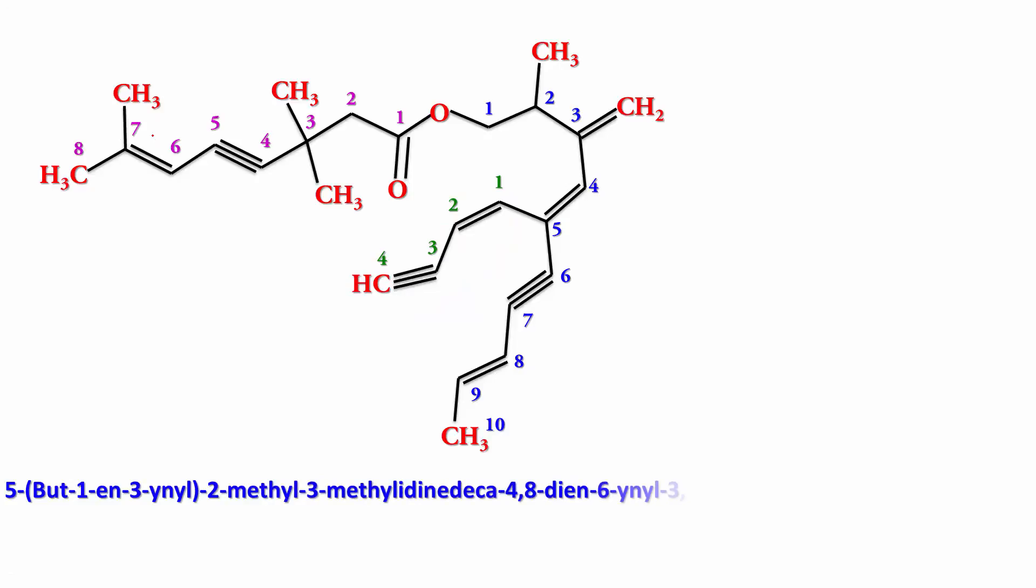3,3,7-trimethyl Oct-6-en-4-ynoate. So the complete name is 5-(Bute-1-en-3-ynyl)-2-methyl-3-methylidine Deca-4,8-dien-6-ynyl 3,3,7-trimethyl Oct-6-en-4-ynoate.